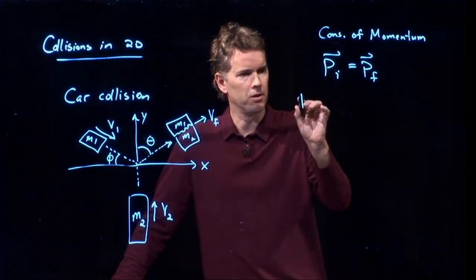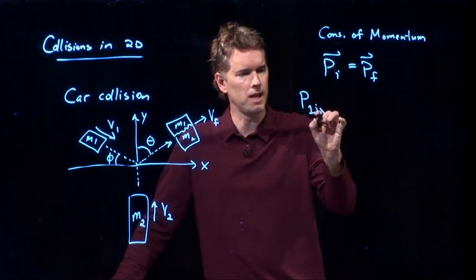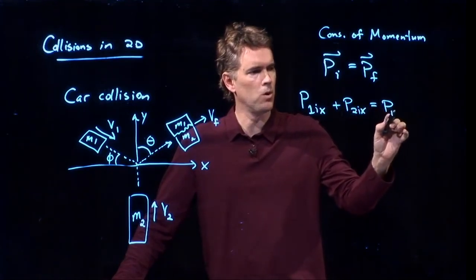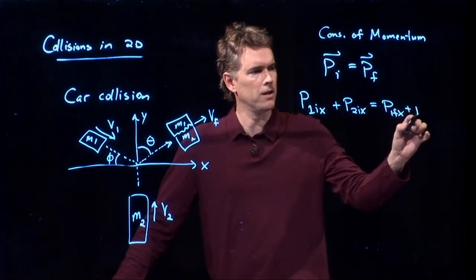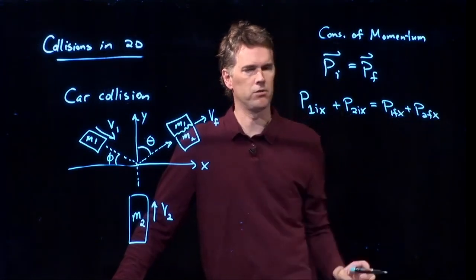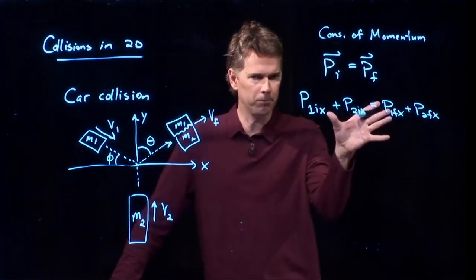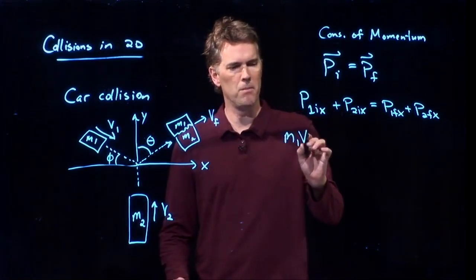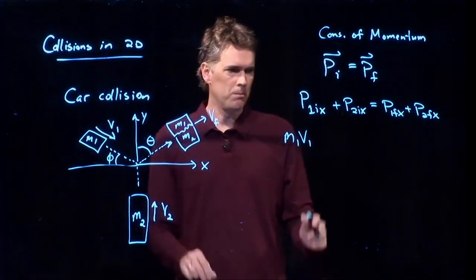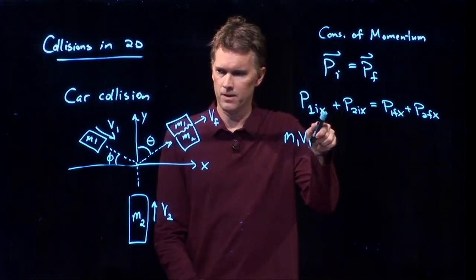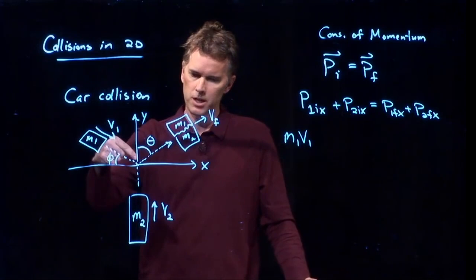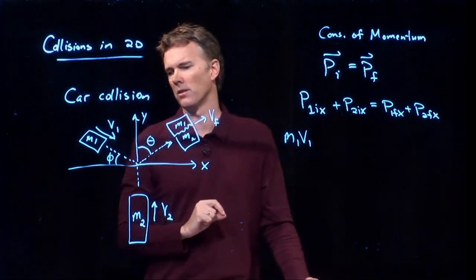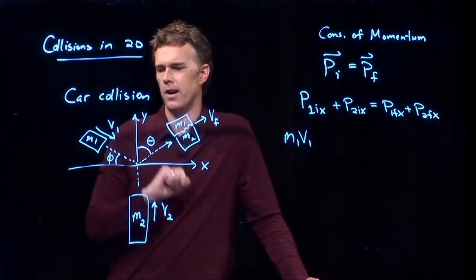Let's do the x components first. P1 initial in the x plus P2 initial in the x equals P1 final in the x plus P2 final in the x. And let's do this part explicitly. So M1 v1 is the momentum of the initial guy. But we want the x component of it. It's coming down at this funky angle. It's partially in the x. It's partially in the y. So we have to worry about what is in the x direction.